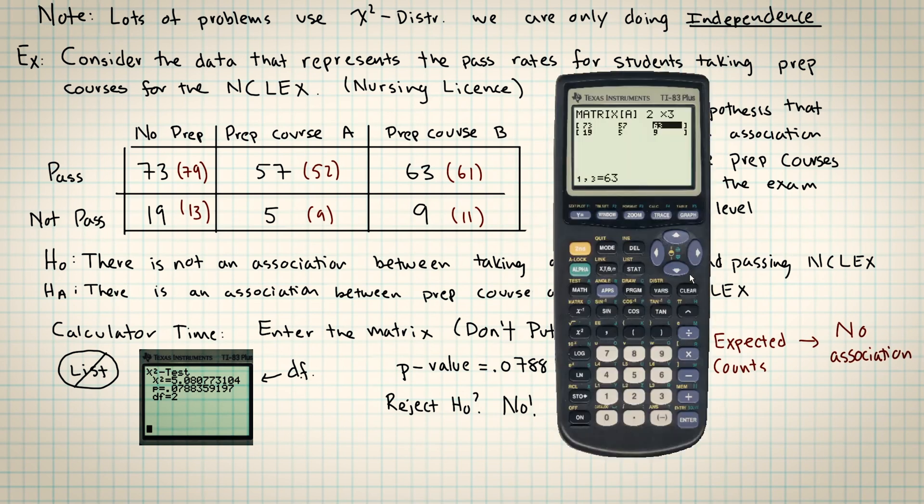So I'm going to mess with this data to try to make it reject. And so what I need to do is push the observed counts farther away from the expected count. For example, let's suppose that I change the data here for prep course B. Let's suppose that it came in a little bit differently and there were seven more people that passed and seven fewer people that failed. Let's see if that would be enough to do it. So I'll change this 63 to a 70 and then I'll change this 9 to a 2. And you can see that would have done it.